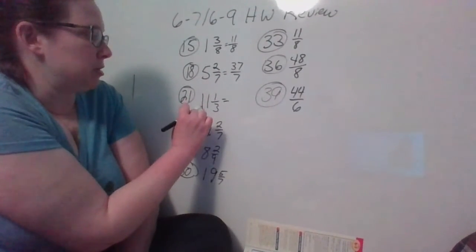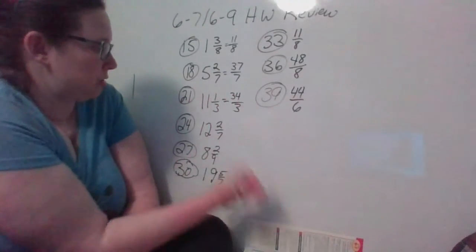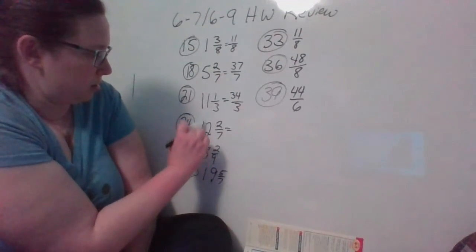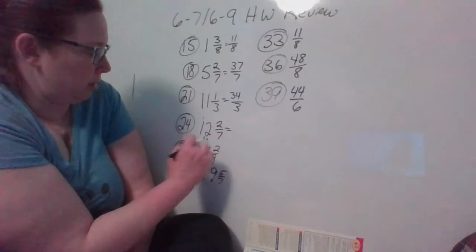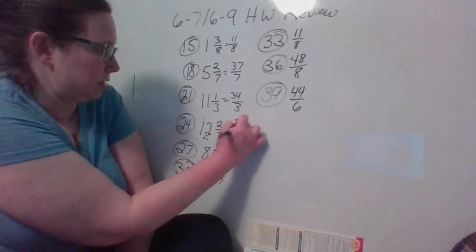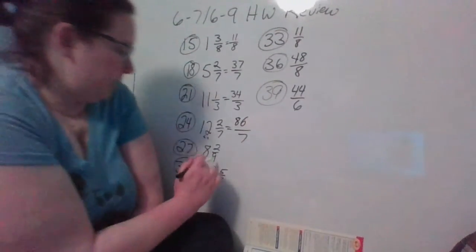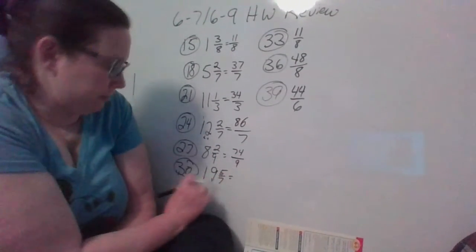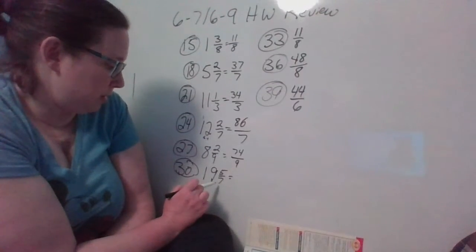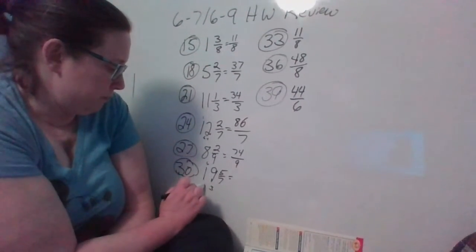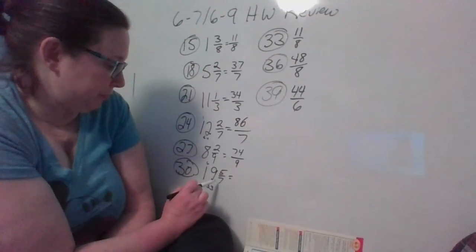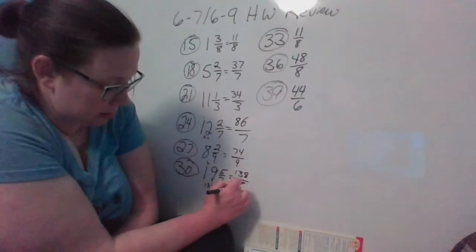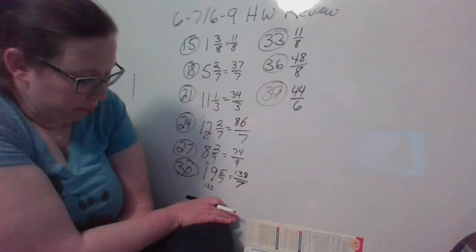Three times eleven is thirty-three, plus one more is thirty-four thirds. Twelve times seven would be eighty-four, plus two more would be eighty-six sevenths. Eight times nine is seventy-two, plus two more would be seventy-four ninths. Nineteen times seven would be one thirty-three, plus five more is one thirty-eight sevenths. So that's all of our mixed numbers into improper.